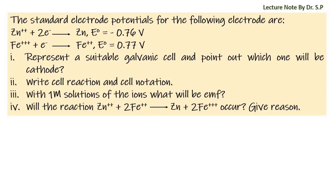Part i: Represent a suitable galvanic cell and point out which one will be cathode. Part ii: Write cell reaction and cell notation. Part iii: With 1M solutions of the ions, what will be emf? Part iv: Will the reaction Zn²⁺ + 2Fe²⁺ → Zn + 2Fe³⁺ occur? Give reason.